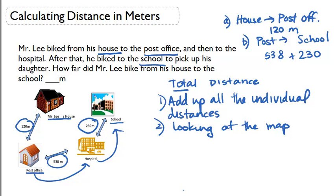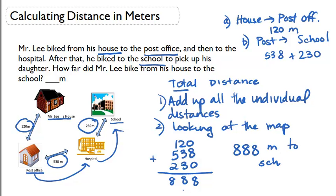So now we have to add up all the individual distances. We have 120, 538, and 230. We are going to find the sum. 0 plus 8 plus 0 is 8, 2 plus 3 plus 3 is also 8, 5 plus 2 plus 1 is also 8. So Mr. Lee biked a total of 888 meters to school. That is our final answer, 888.